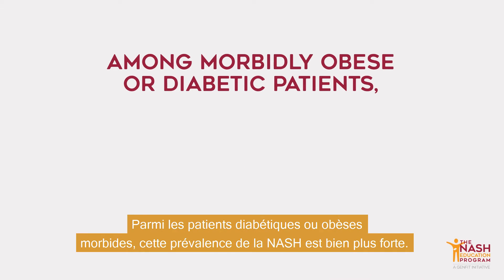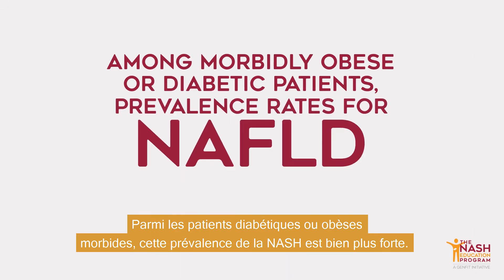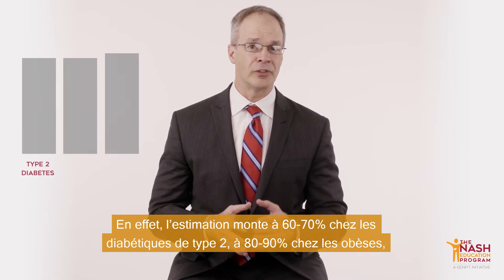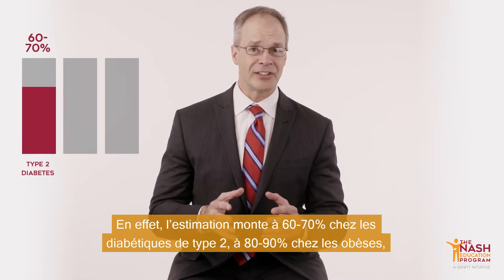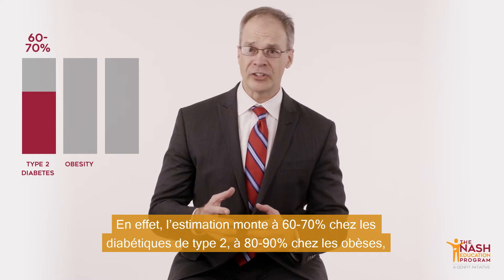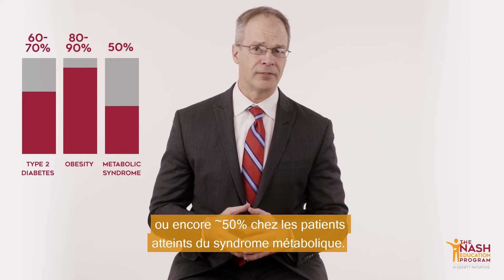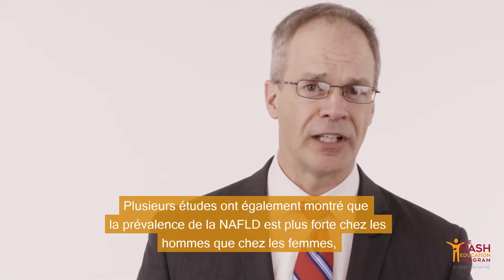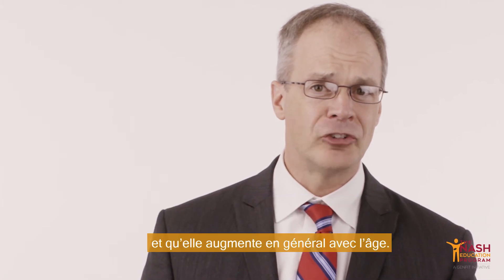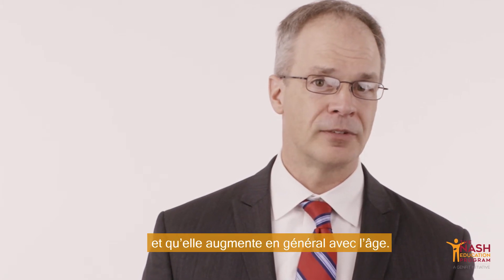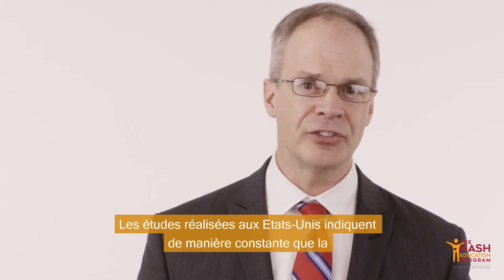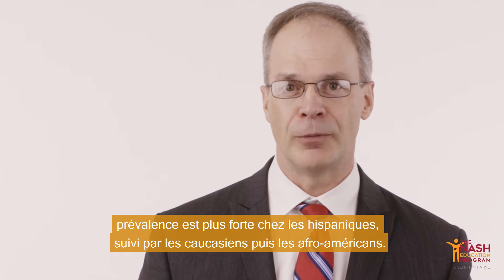Among morbidly obese or diabetic patients, prevalence rates for NAFLD are thought to be much higher — rising to 60 to 70 percent in those with type 2 diabetes, 80 to 90 percent in obesity, and about 50 percent in metabolic syndrome. Studies have also found that the prevalence of NAFLD is higher in males than females and generally increases with age. In the U.S., prevalence is consistently higher in Hispanics, followed by Caucasians and African Americans.